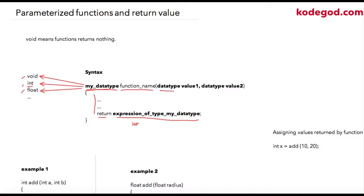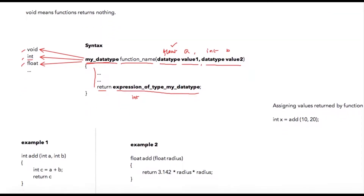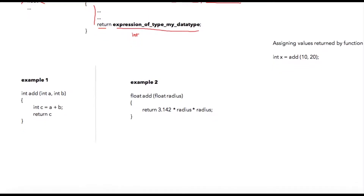To add parameters to your functions, you just need to specify a data type and a variable name. You can add any number of parameters to your function — for example, a float variable 'a', then another data type like int 'b'. So you can have any data type and any number of variables for your functions. In example one, I have defined a function called 'add' to which I am passing two integers and it will return an integer. This is how we should define a function.